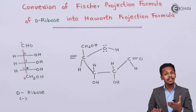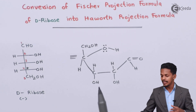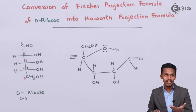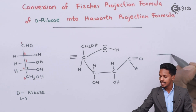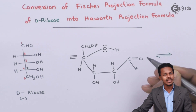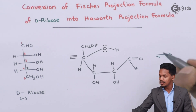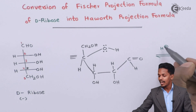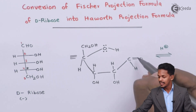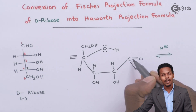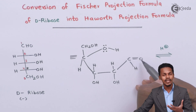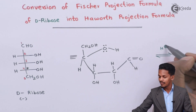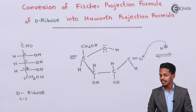To convert this structure into a cyclic structure, we have to treat it with acid — this is a reversible reaction. When treated with acid, the hydrogen will approach the oxygen of the carbonyl group, because in the carbonyl group the oxygen is more electronegative, and that's the reason it approaches towards there.